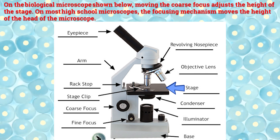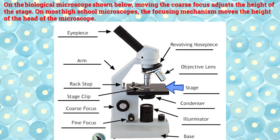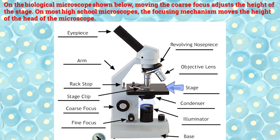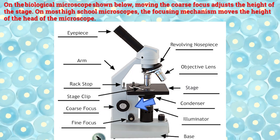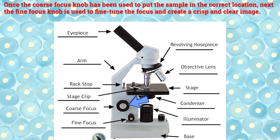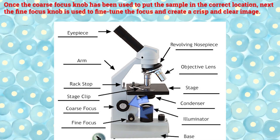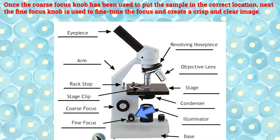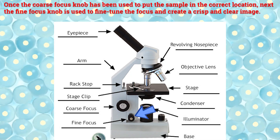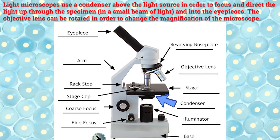On the biological microscope shown, moving the coarse focus adjusts the height of the stage. On most high school microscopes, the focusing mechanism moves the height of the head of the microscope. Once the coarse focus knob has been used to put the sample in the correct location, next the fine focus knob is used to fine-tune the focus and create a crisp and clear image.